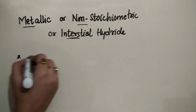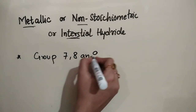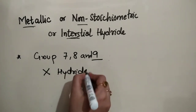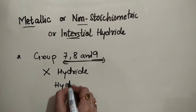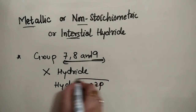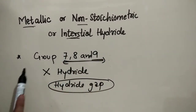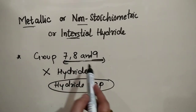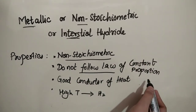An interesting fact: elements of Group 7, 8, and 9 do not react with hydrogen — they do not form any hydride. This region of the periodic table is therefore called the hydride gap. This is an important point: Group 7, Group 8, and Group 9 do not form any hydride.